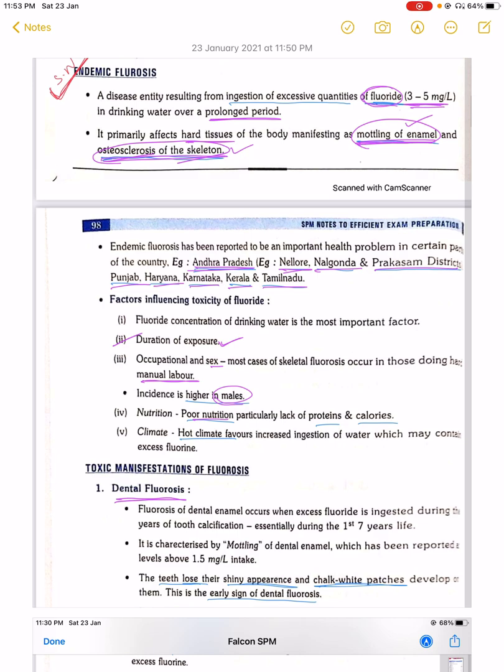Let's start the topic of endemic fluorosis. What is the definition? It is a disease entity resulting from ingestion of excessive quantities of fluoride in drinking water over a prolonged period. When the fluoride amount exceeds 3 to 5 milligrams per liter, it can affect the enamel and teeth and also cause osteosclerosis of the skeleton.